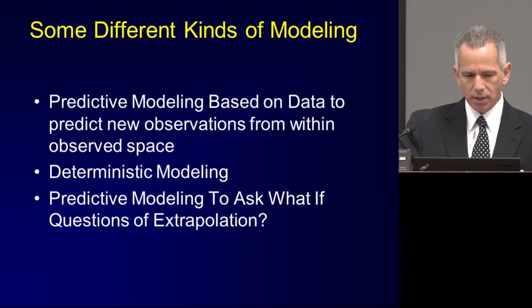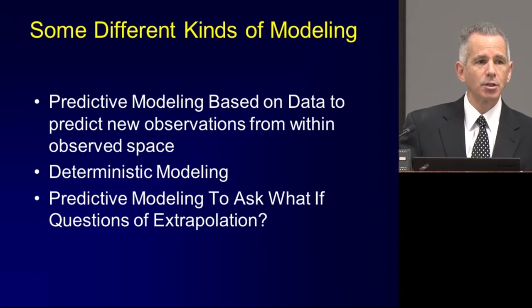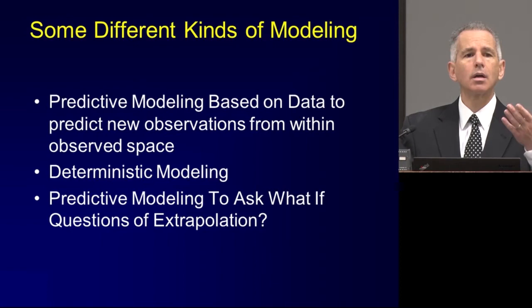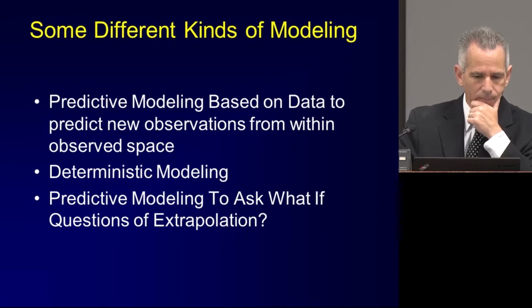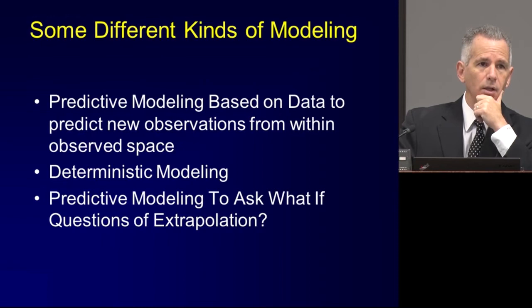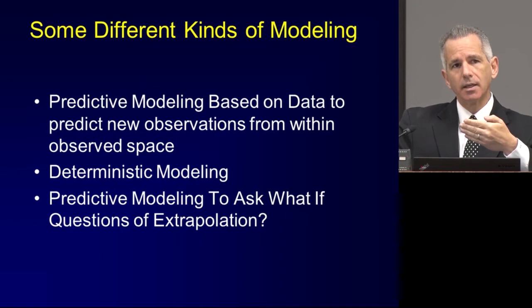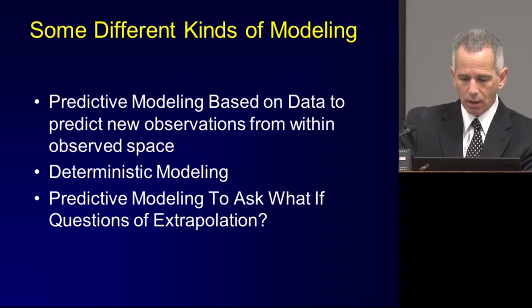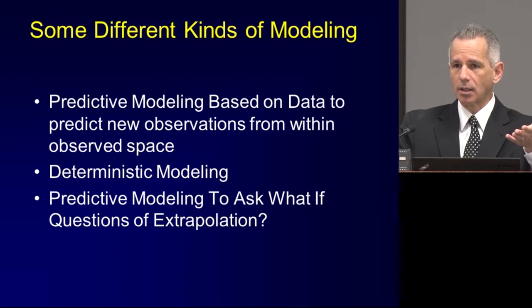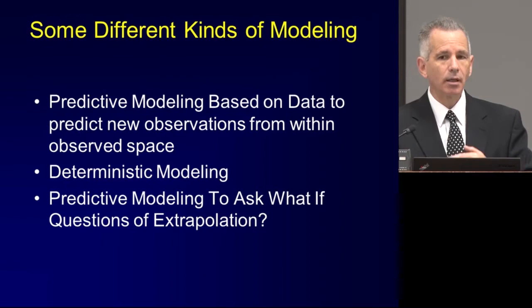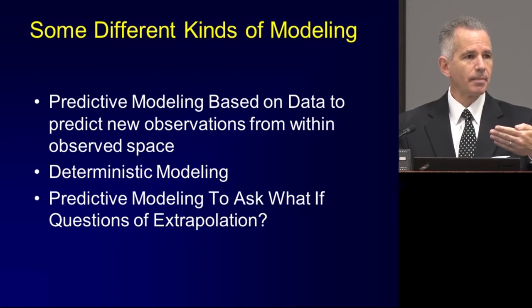There are different kinds of modeling to consider. There's predictive modeling based upon data, which predicts new observations from within observed data space — classic examples are RMR prediction equations, where you have someone's height, weight, age, race, and sex and predict their resting metabolic rate using a regression-type equation. There's deterministic modeling, which you'll hear more about from Diana Thomas and Kevin Hall, in which a mathematical model often based upon theory predicts deterministically what someone's weight would be under some circumstances. And there's predictive modeling that tests what-if questions, usually involving extrapolation — very common in policy — where we're not staying within the observed data space but extrapolating to a future time, which involves heavier assumptions and different methods.